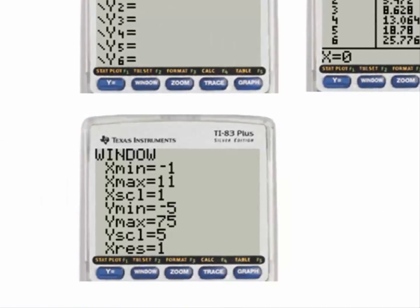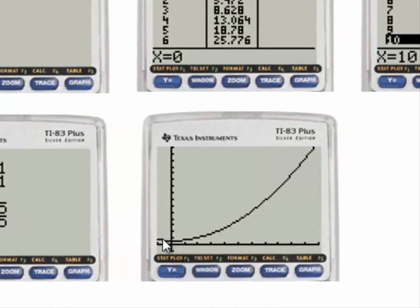To get a picture, we hit window. For the y-min, we use negative 1 so we can see the y-axis. The x-max I'm going to use 11. For the y-min, I'm going to use negative 5 so I can see the x-axis, and for the y-max, I'm going to use 75. Why am I using 75? Because the largest value that I saw in the table was about 67, so this will be a little bit larger than the biggest y value. Here is the parabola, so we can see from 0 to 10, this is an increasing function.